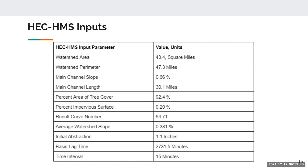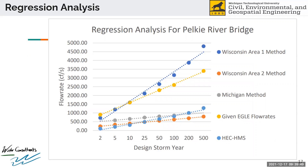Combining the flow rates from the regression analysis and the HEC-HMS analysis, we can see the Michigan method, the Wisconsin Area 2 method, and the HMS method all line up pretty well with each other. The Wisconsin Area 1 method is a bit of an outlier. Because it's a temporary structure, we're using a 10-year flow rate for our design, which is standard. Our highest 10-year flow rate gave us a conservative design value.